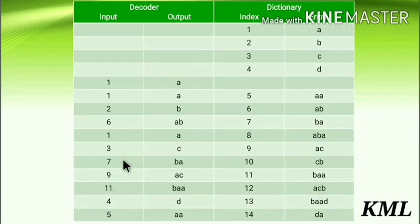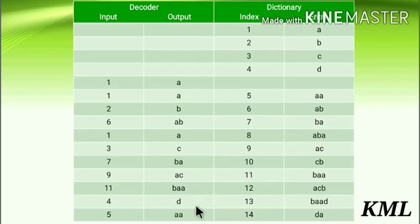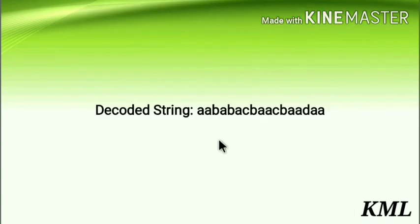The input is fully processed and the output you get is: a, b, ab, ac, ba, ac, ba, ad, aa — this is the final decoded string.